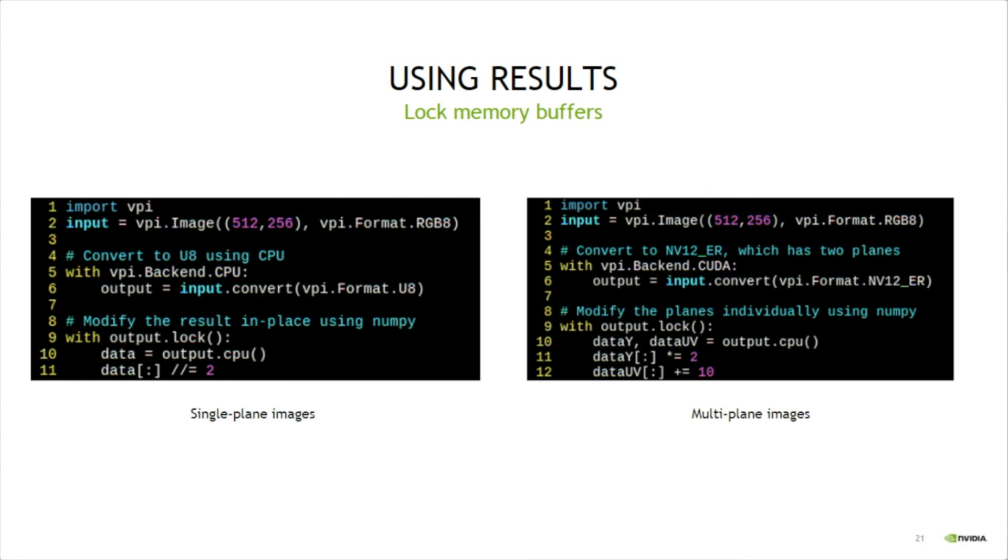After that, the object's CPU method can be invoked, which will return one or more NumPy arrays that act as a view to the buffer contents. These NumPy arrays can be read from or written to, with changes reflected back to the buffer's memory. The memory object is unlocked once the scope is closed.